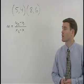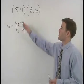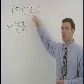Let's say we're asked to find the slope of the line that passes through the points (5, 4) and (8, 6).